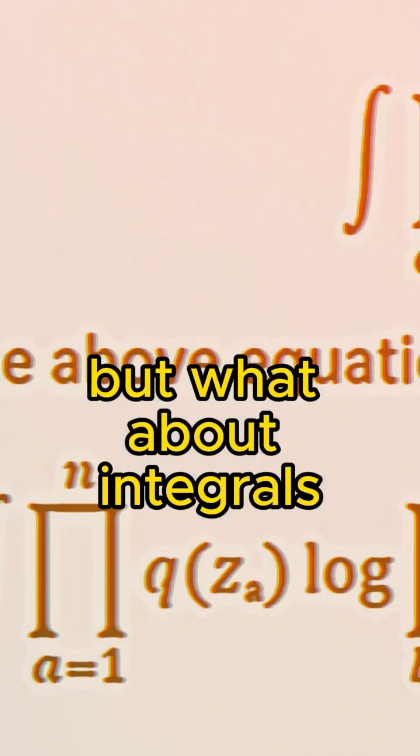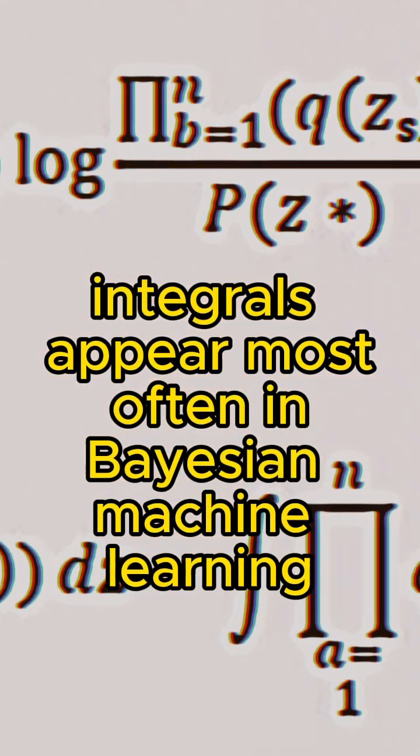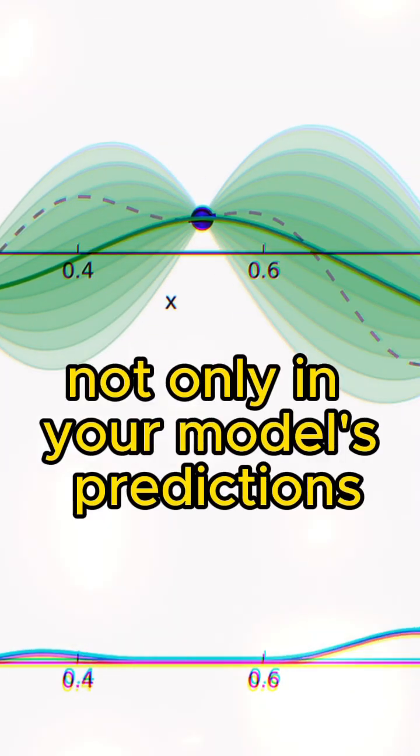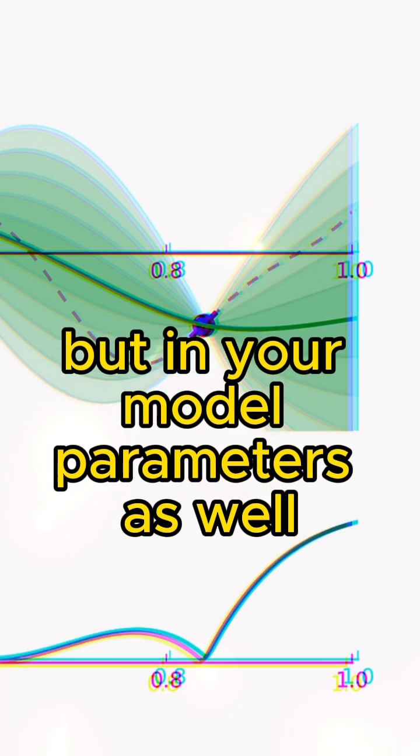But what about integrals? Integrals appear most often in Bayesian machine learning, which is a kind of machine learning that lets you model the uncertainty not only in your model's predictions, but in your model parameters as well.